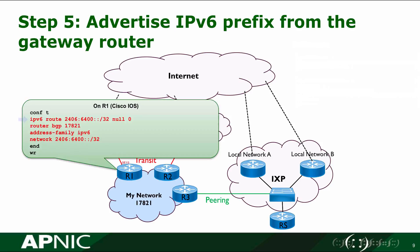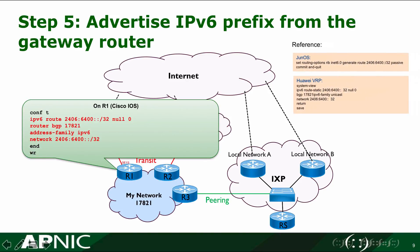Now we are going to advertise the prefix in Step 5. We add a null route first because this aggregated route may not exist in the routing table. In the BGP view IPv6 address family, we advertise this route. The reference configuration for Juniper and Huawei is also provided here.